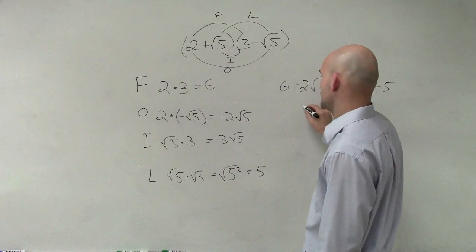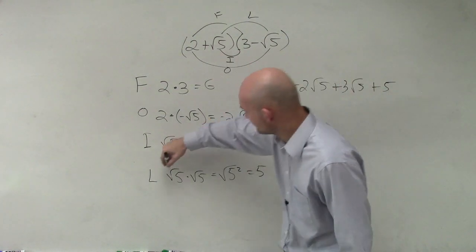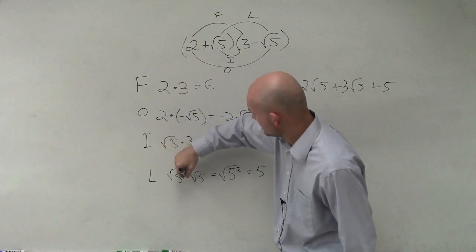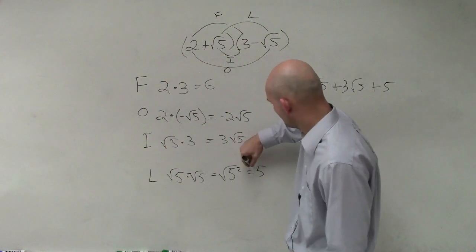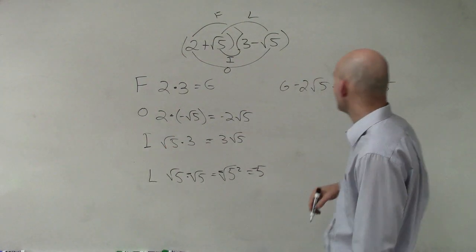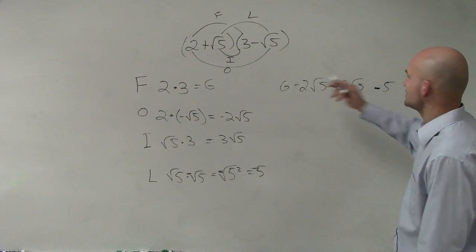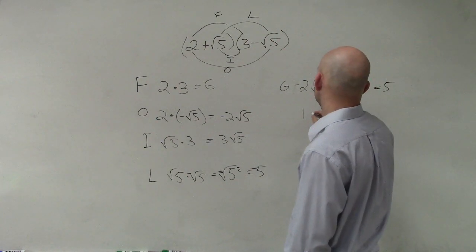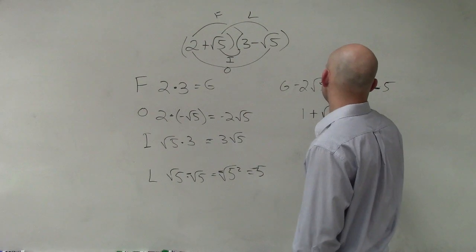And then 6 plus 5 is 11. It's minus 5. Oh, this is a negative, thank you. That was a negative 5, right? Thank you very much. So that's a negative 5. So 6 minus 5 is 1 plus square root of 5.